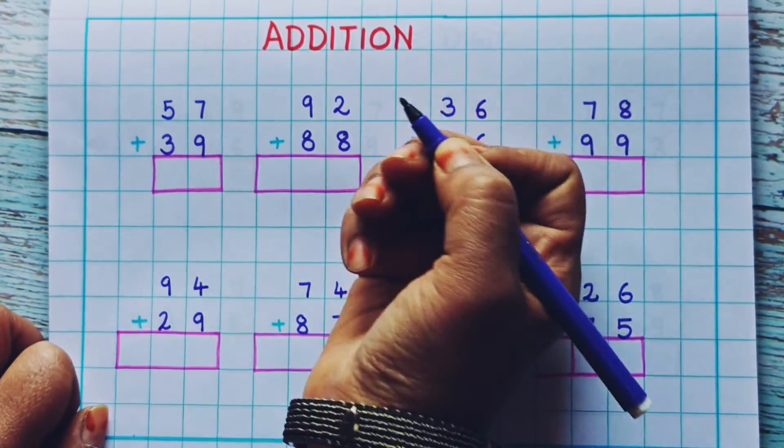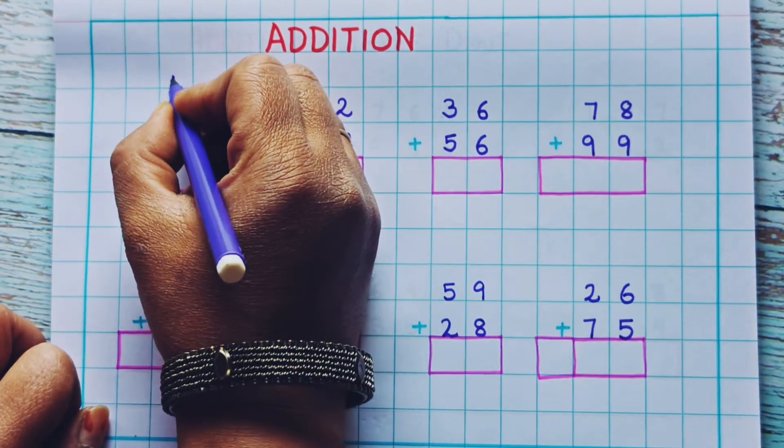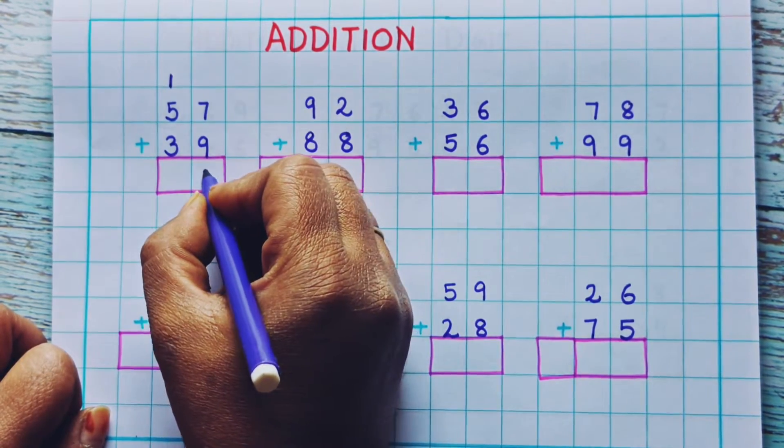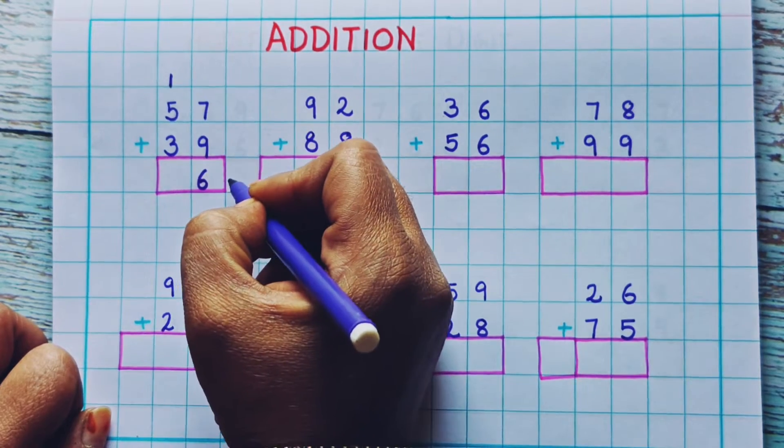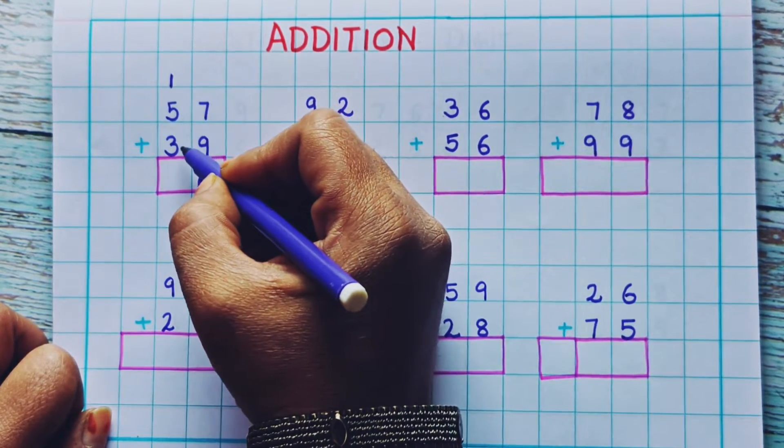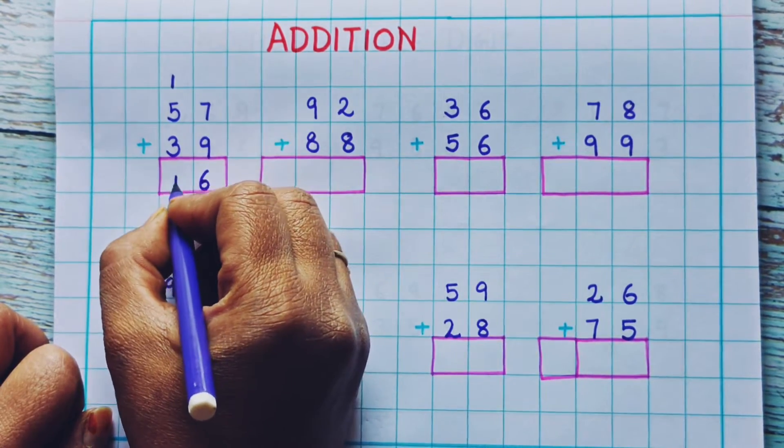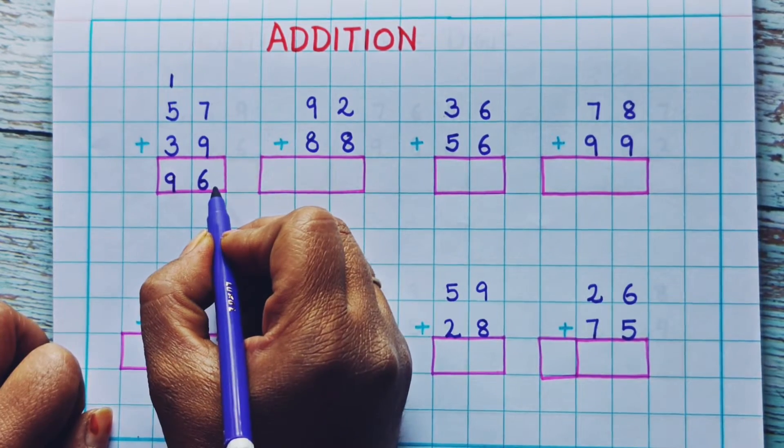Now 16 is a two-digit number. So I will write 1 as a carryover. Here I will write 1 and here 6. Then 1 plus 5 is 6. 6 plus 3 is 6, 7, 8, 9. So I will write here 9. The answer is 96.